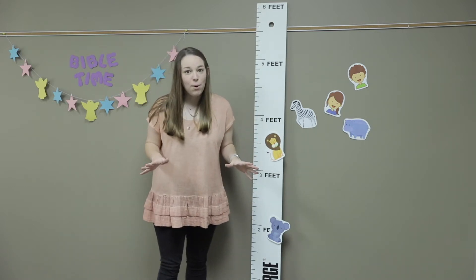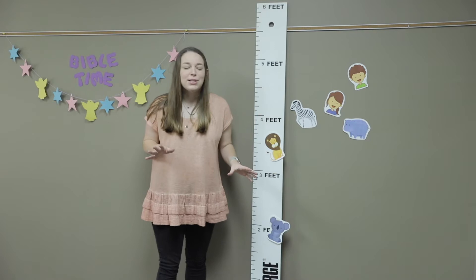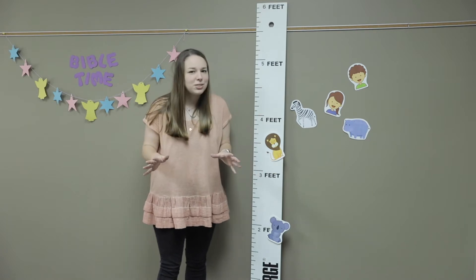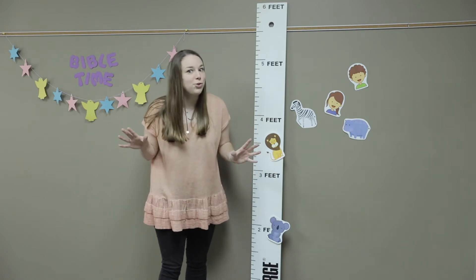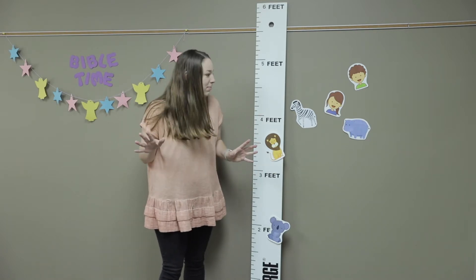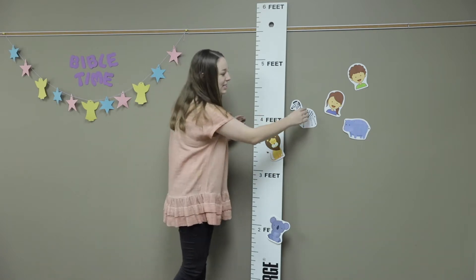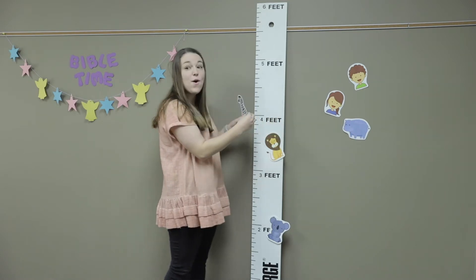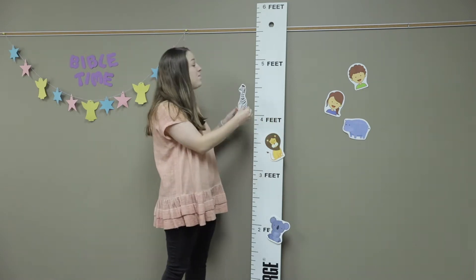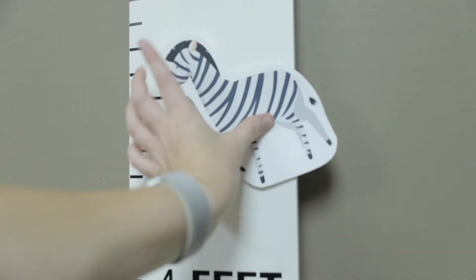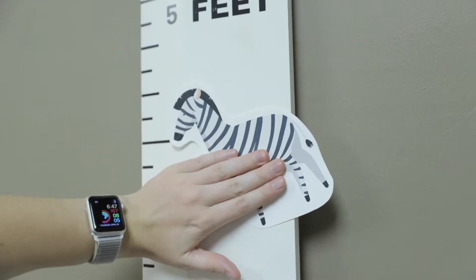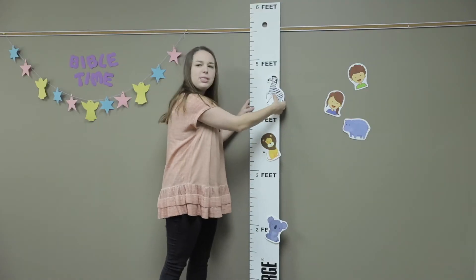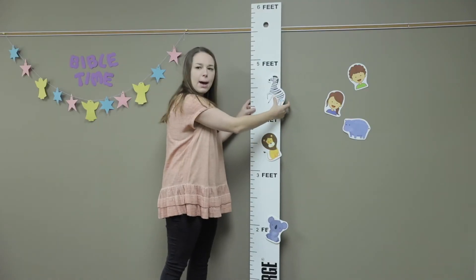The next animal is a little bit like a horse, but it has a lot of stripes on it — it's the zebra. A zebra is over four feet tall, so we're going to put him right here. He's almost as tall as I am.